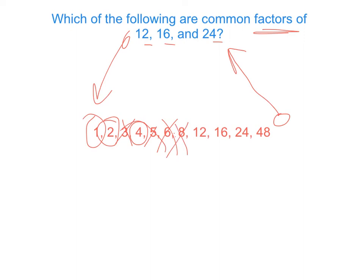12 can go into 12, but 12 cannot go into 16. Now the last three answer choices — I don't even have to check them, because they're all greater than 12, so I know they cannot be factors. So 1, 2, and 4 are the common factors. You could still do this the old-fashioned way and that's perfectly okay, or this is a way you can use the answers against the problem.